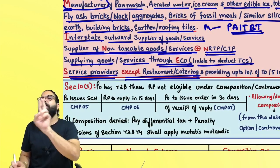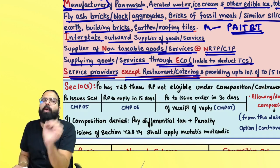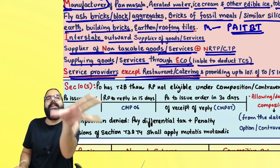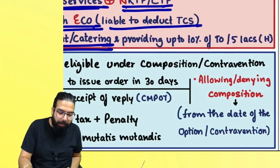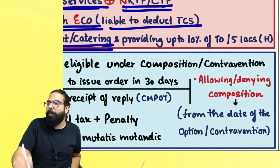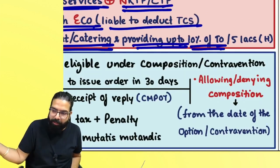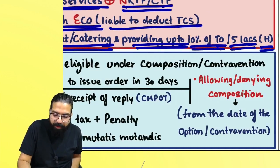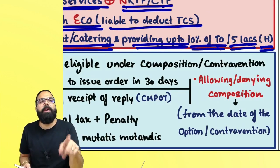If you are ineligible under Section 10(1), you can go for Section 10(2A). Also, if you are eligible under 10(1) but want to provide a little bit of services, the government will allow you to provide marginal services — up to 10% of your turnover in the preceding financial year or 5 lakh rupees, whichever is higher.